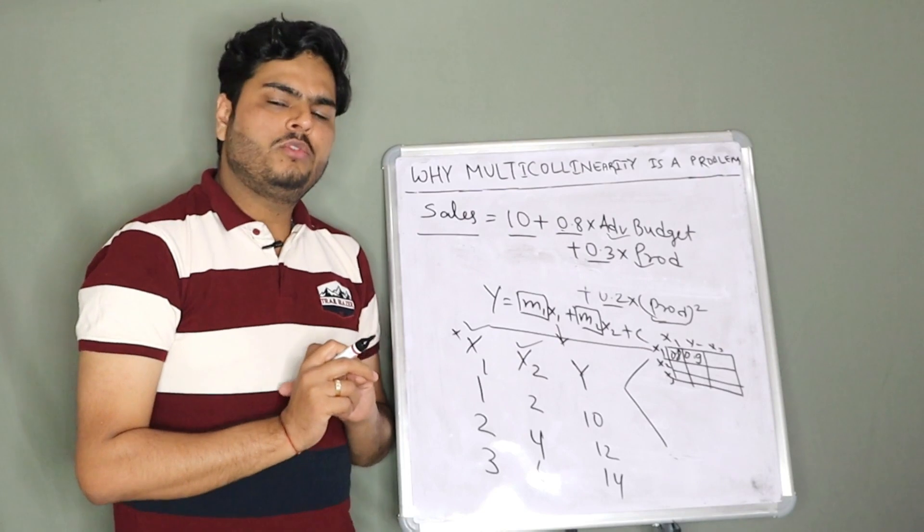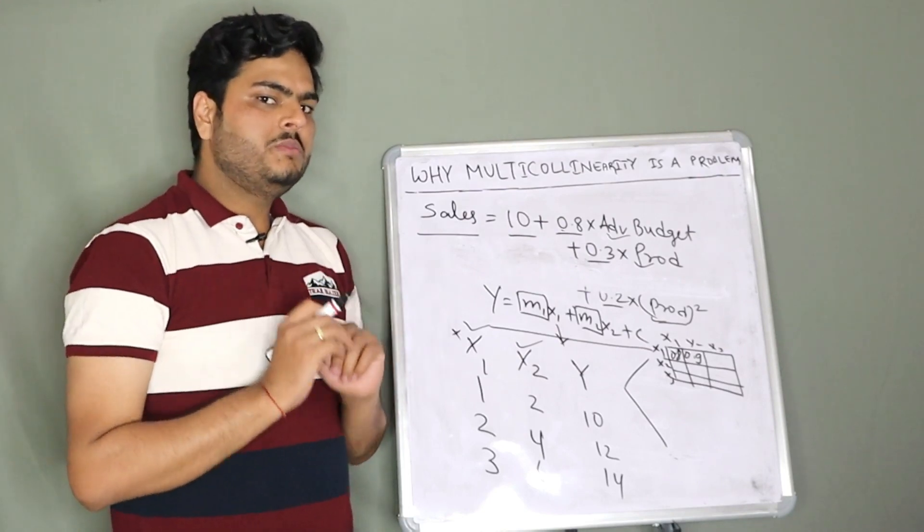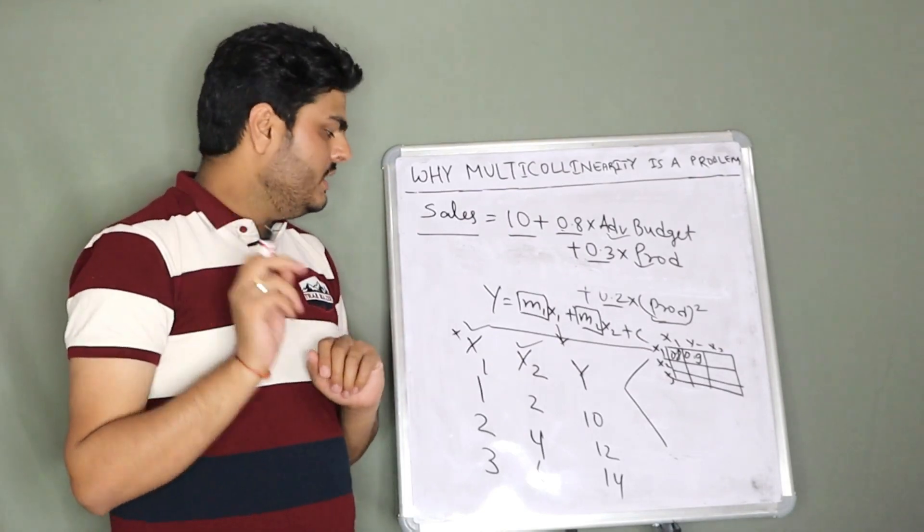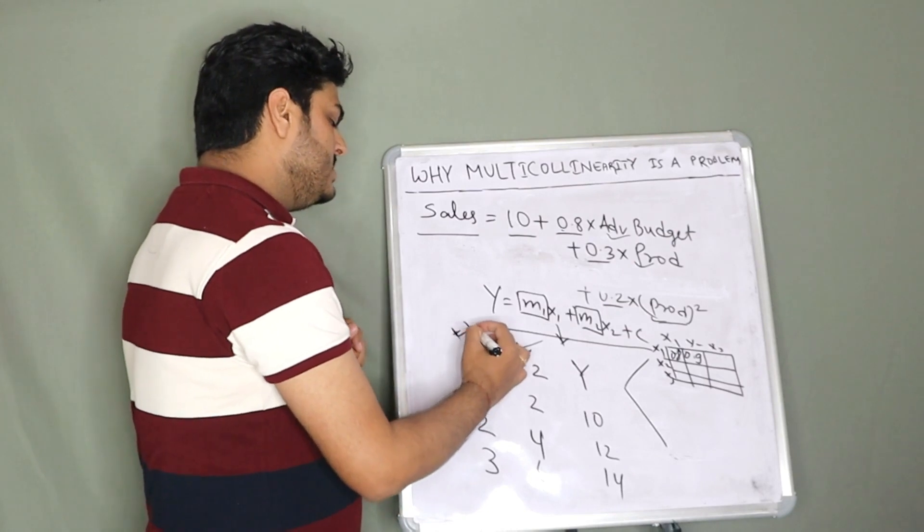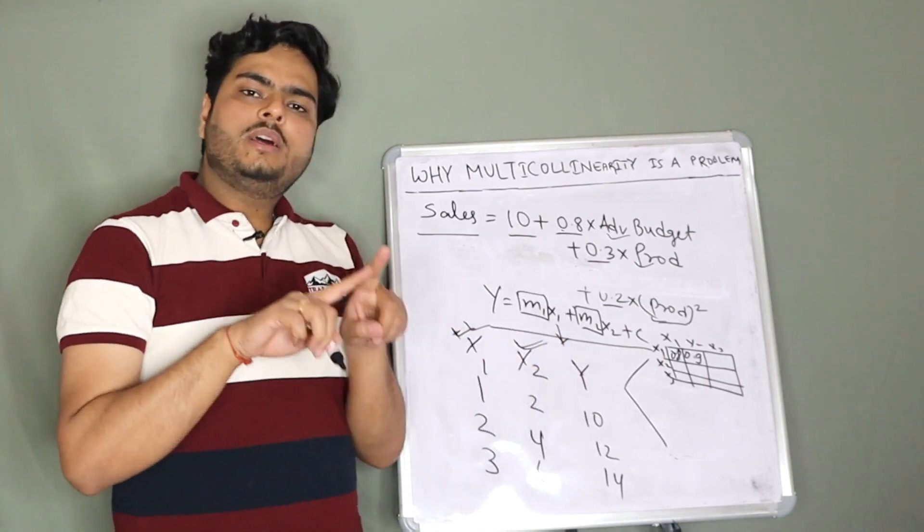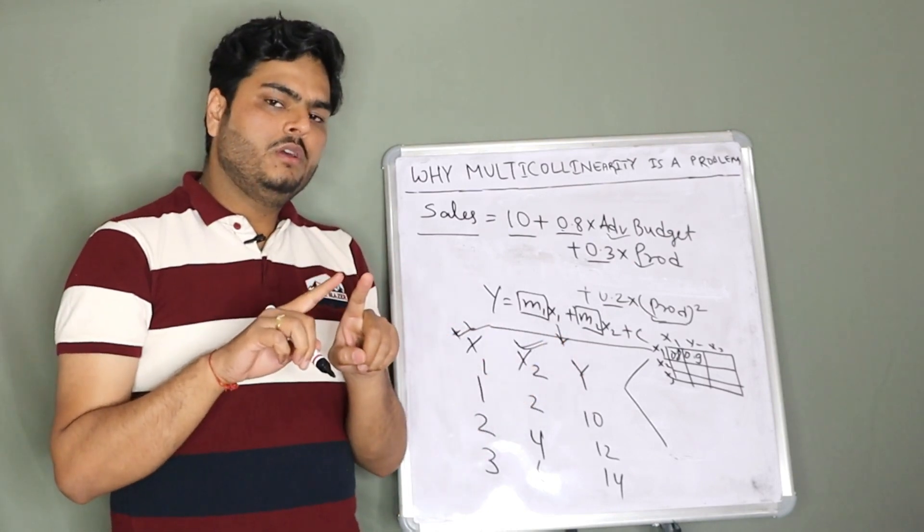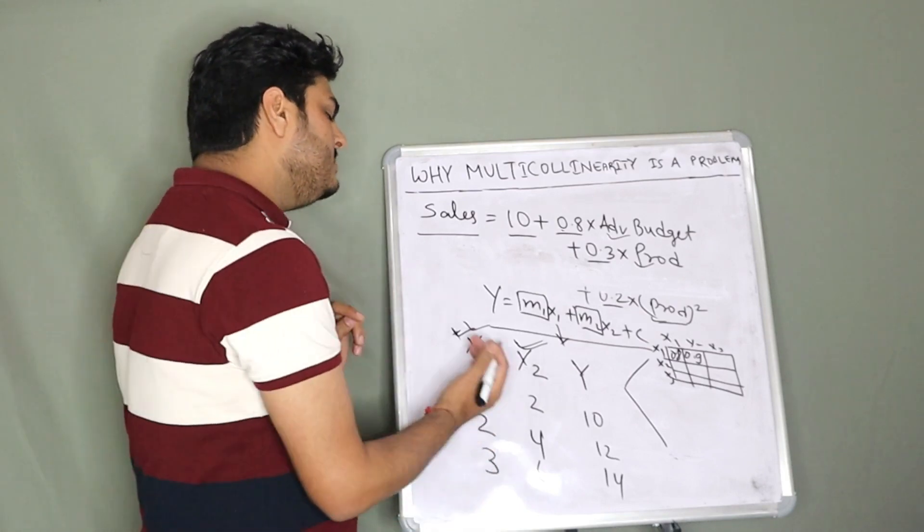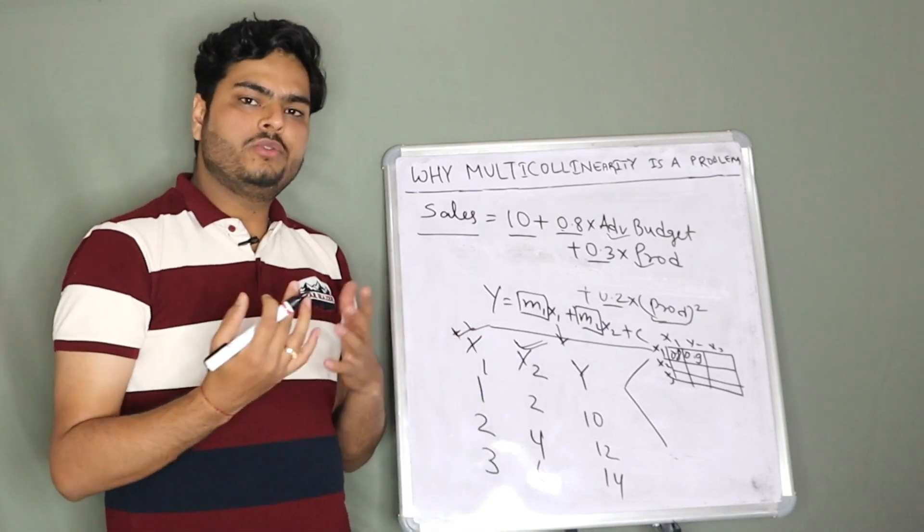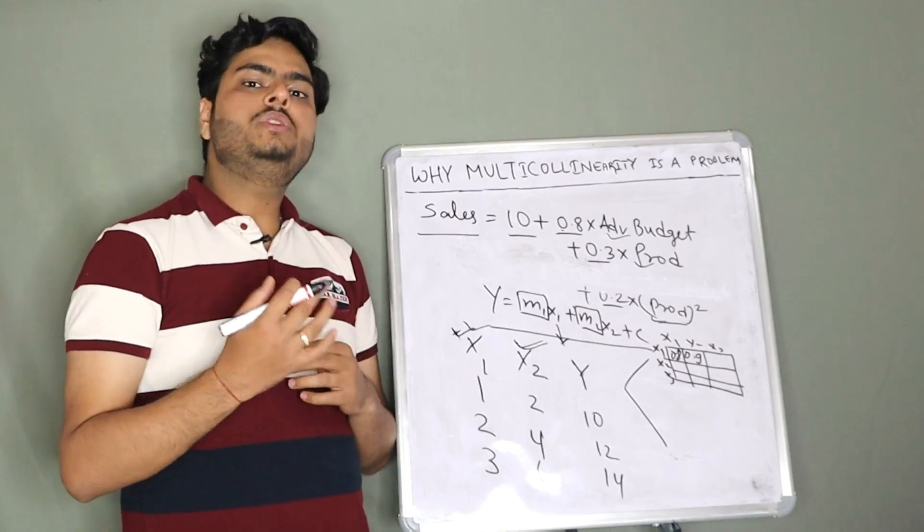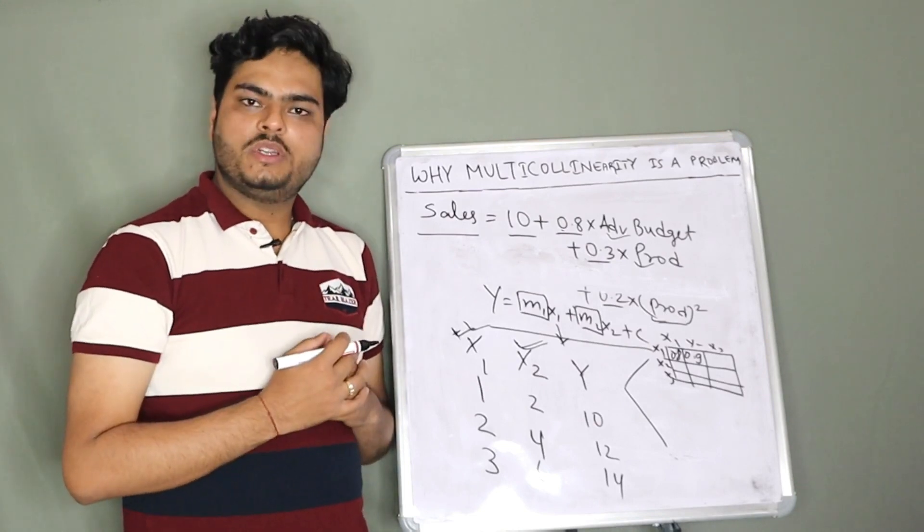One question I have from you that you have to answer me in the comment: let's say there are two variables x1 and x2 in the data, both are highly correlated. Now, we have discussed one of these should be taken out. Which one is my question to you? Which one? You have to answer me in the comment.